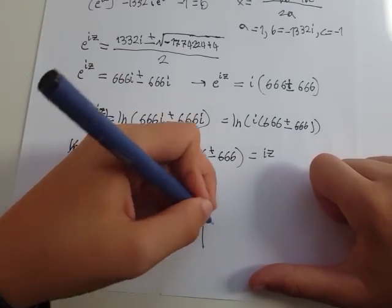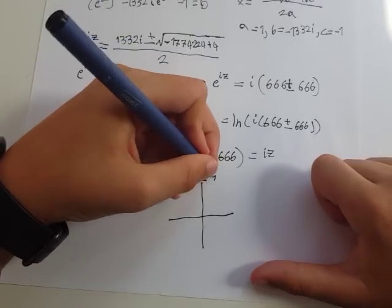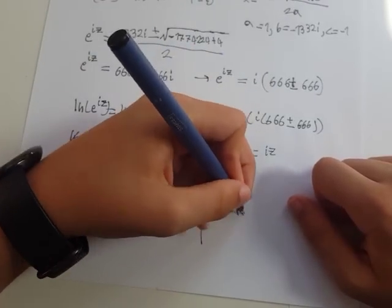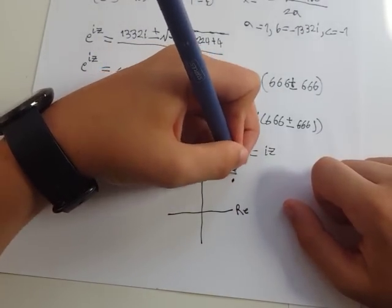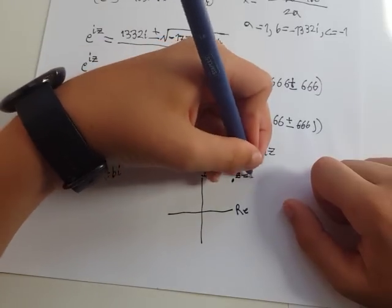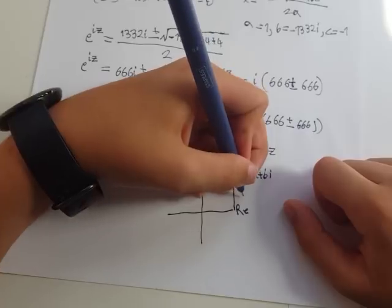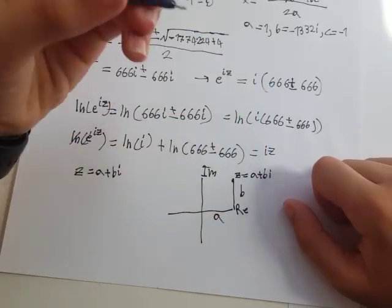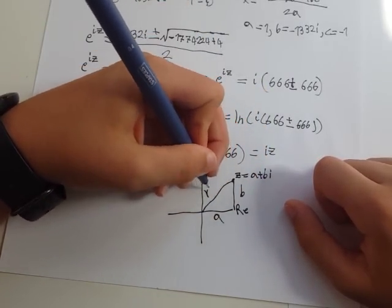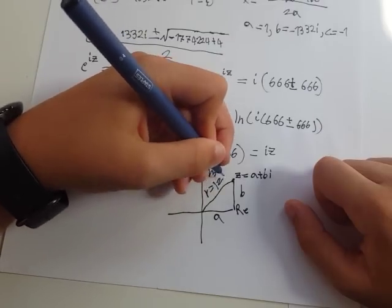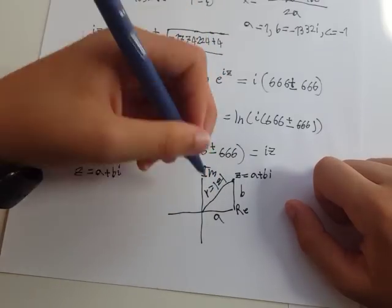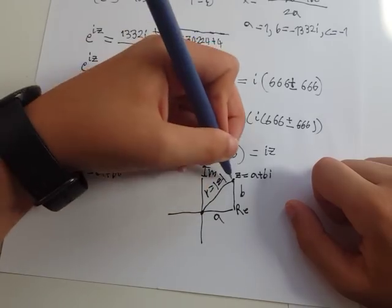If we were to graph this with the imaginary axis here and the real axis here, z is here. This is b and this is a. This will be r, which equals the absolute value of z, which is the distance from the origin to z.